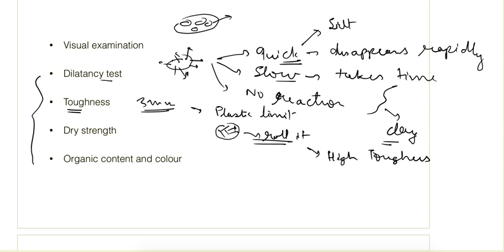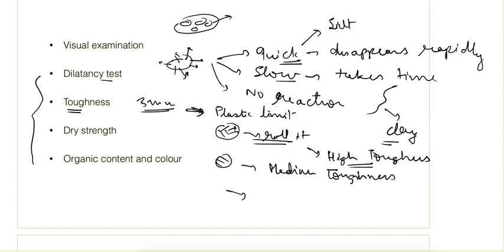High toughness means the soil can be rolled below its plastic limit — it has reached its plastic limit, but after kneading it loses some water and can still be rolled with extra pressure. Similarly, if it starts to crumble when rolled below its plastic limit, that is medium toughness. If it cannot be rolled again at all, or if it crumbles as we try to knead it, then it has low toughness.